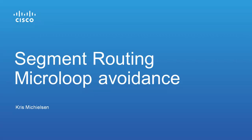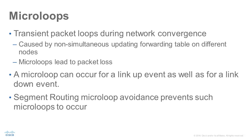Segment Routing Microloop Avoidance. My name is Chris Mickelson. Microloops are transient packet loops that occur in a network during network convergence. These microloops cause packet loss and out-of-order packets.